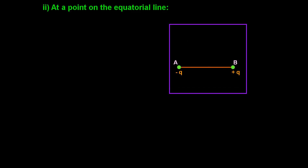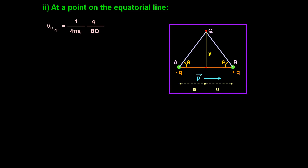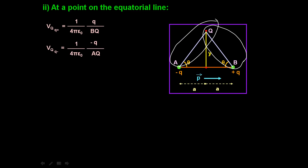Now we'll move on to potential due to an electric dipole on the equatorial line. Consider an electric dipole with minus q and plus q, with dipole moment direction from negative to positive charge. Let O be the center, and consider the point Q on the equatorial line at distance y from the center. At Q, there will be two potentials acting — potential due to minus q and potential due to plus q. The potential due to the positive charge is (1 / 4πε₀) × q / BQ, and for the negative charge it is (1 / 4πε₀) × (−q) / AQ.